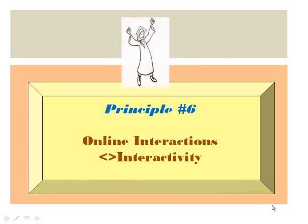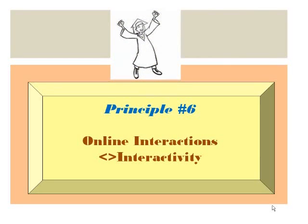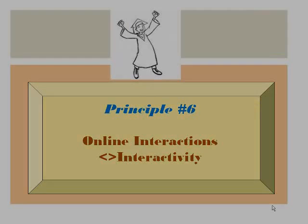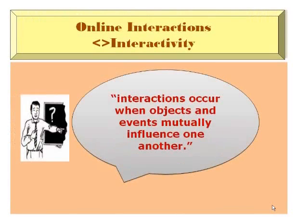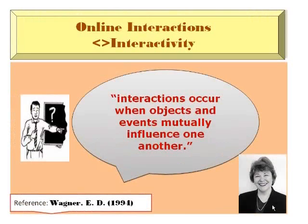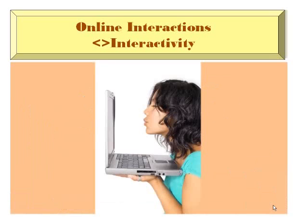Principle 6: Online interactions should not be confused with interactivity. According to Wagner, interactions occur when objects and events mutually influence one another. Interactivity appears to emerge from descriptions of technology for establishing connections from point to point in real time. The disparity seems to be that interactivity involves the technology used in learning, while interactions describes the behaviors of individuals and groups.